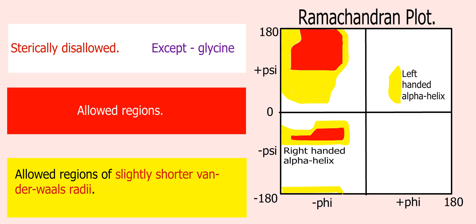The yellow areas show the allowed regions if slightly shorter van der Waals radii are used in the calculation. That is, the atoms are allowed to come a little closer together. This brings out an additional region which corresponds to the left-handed alpha helix.